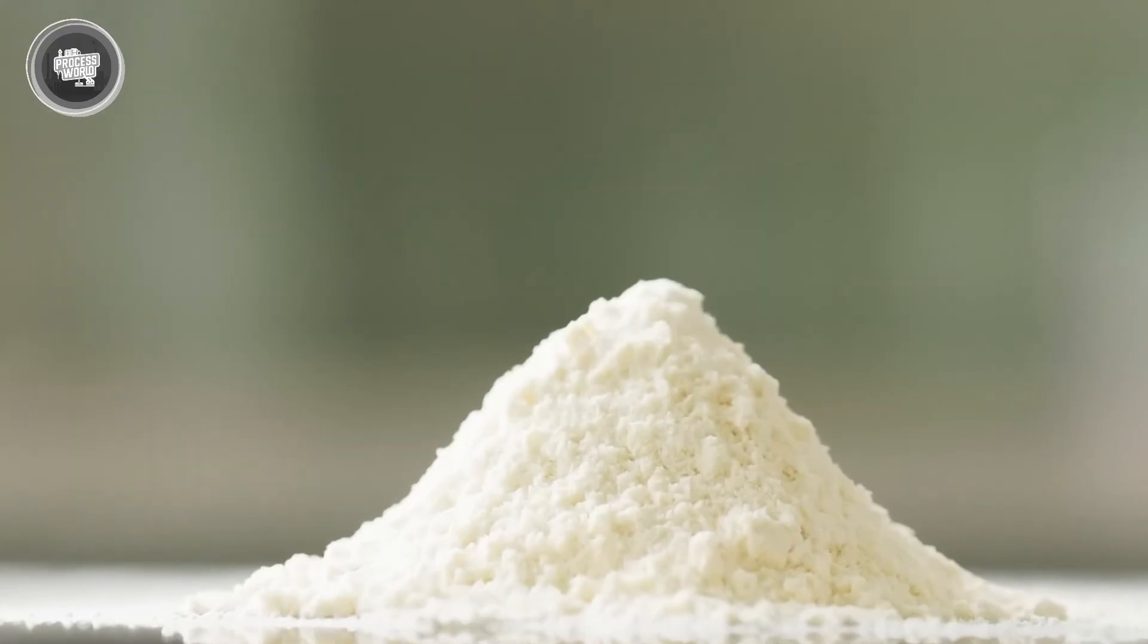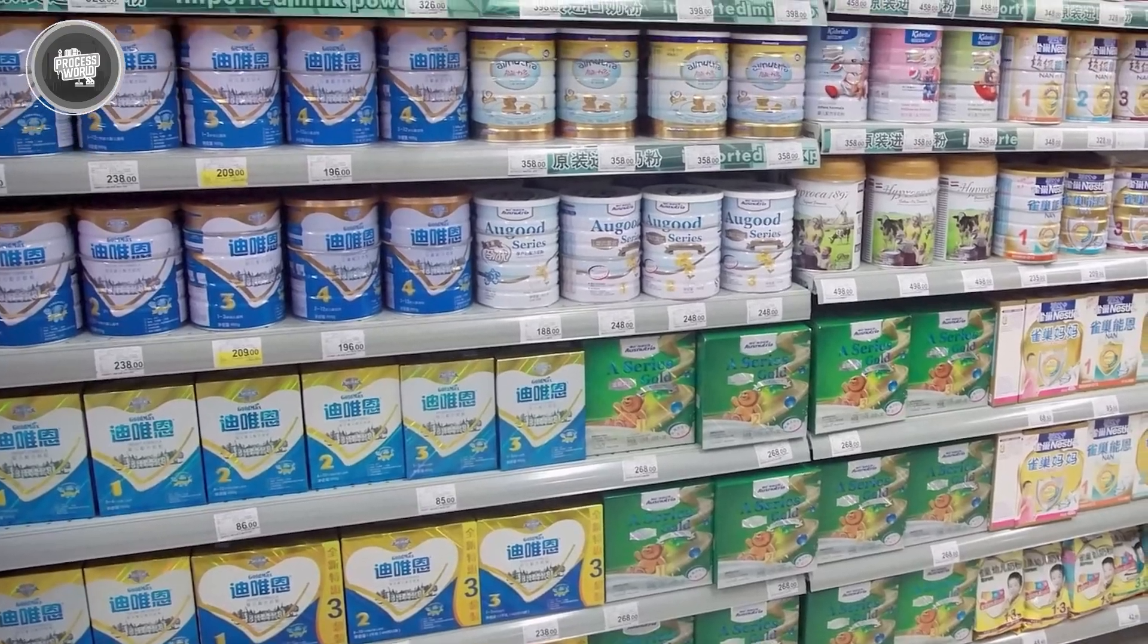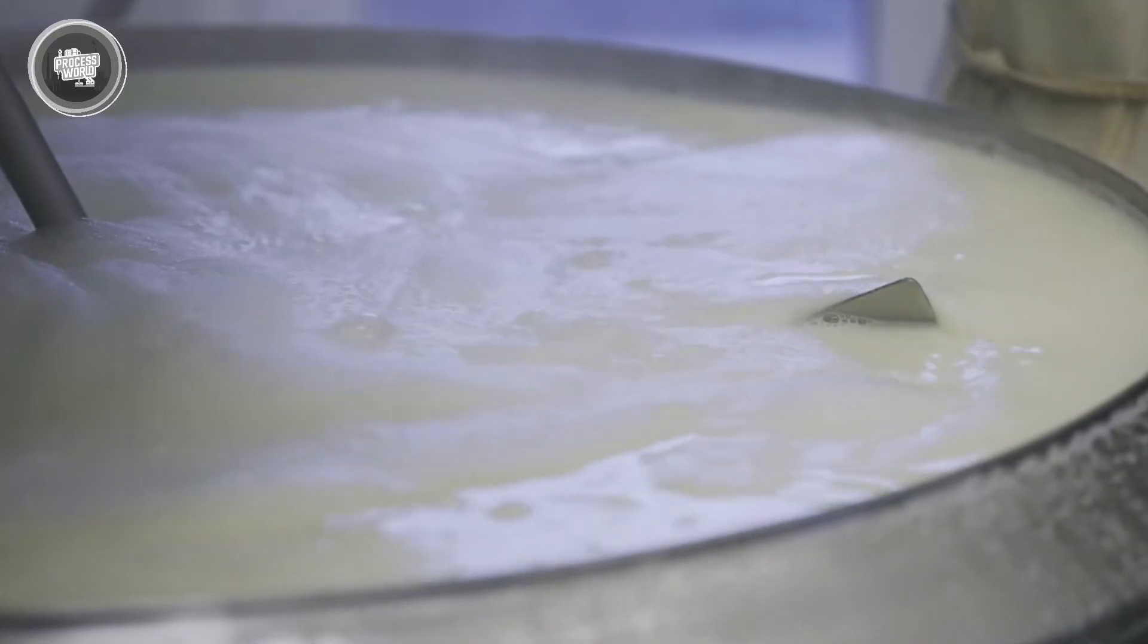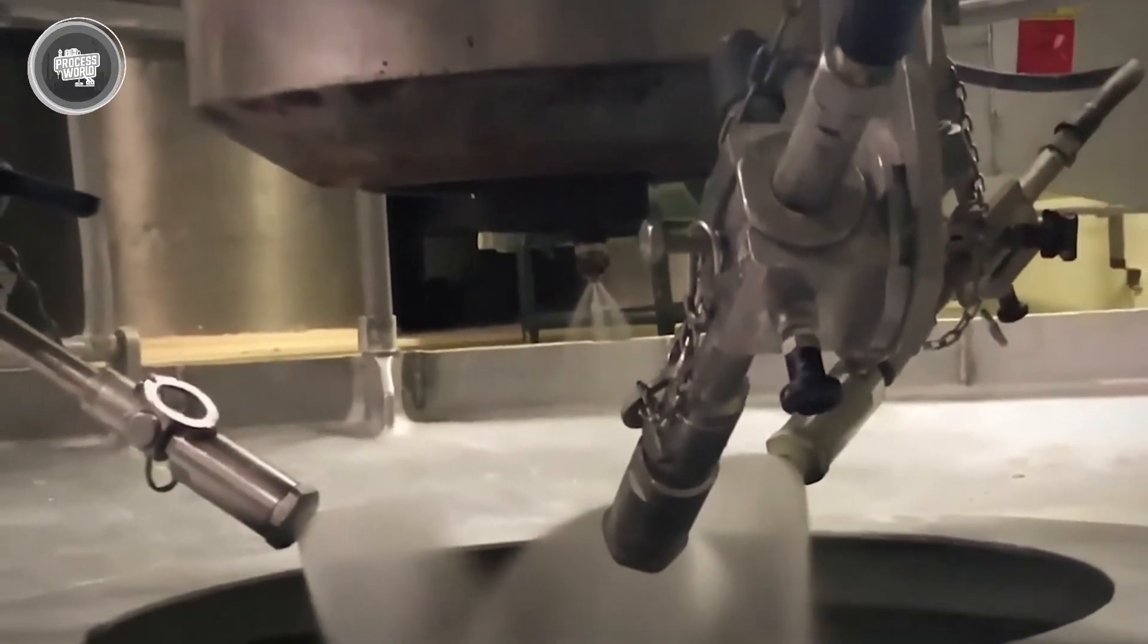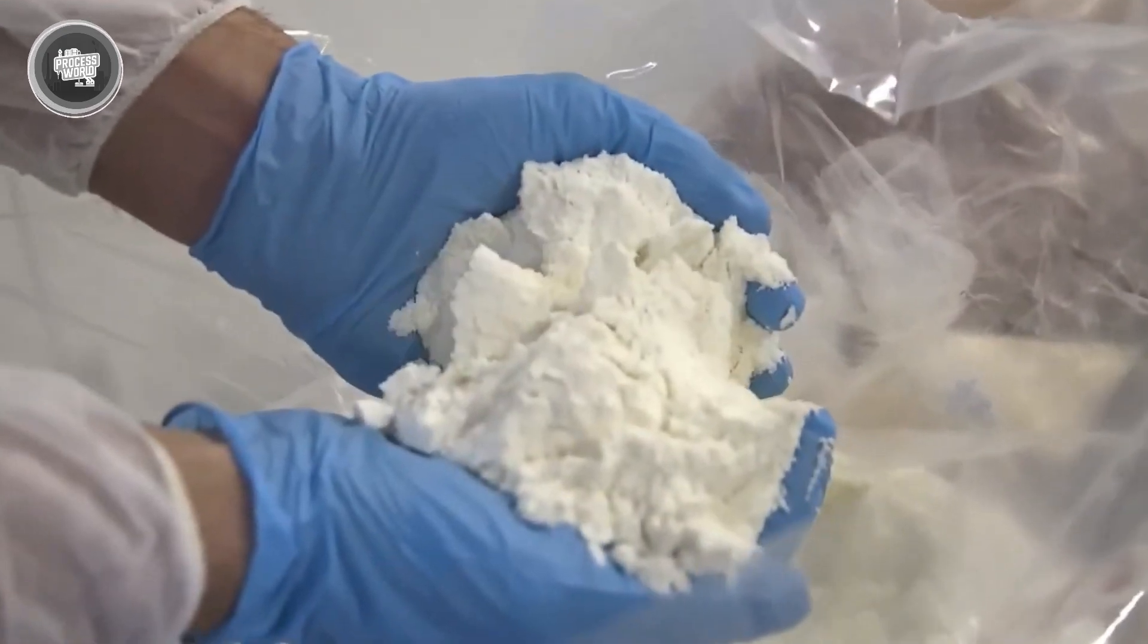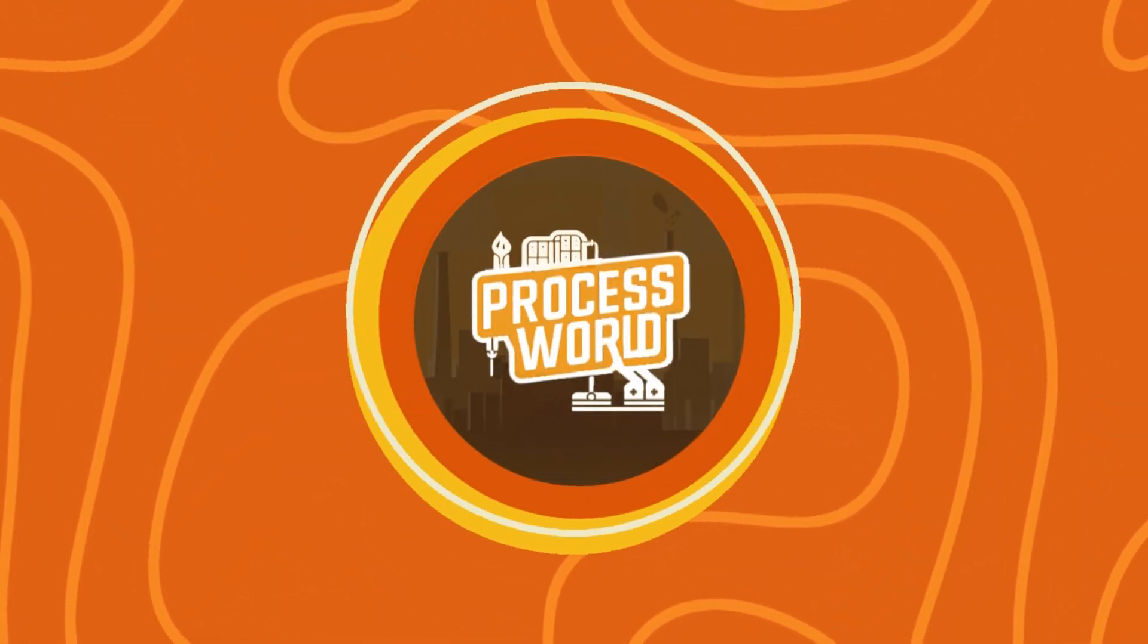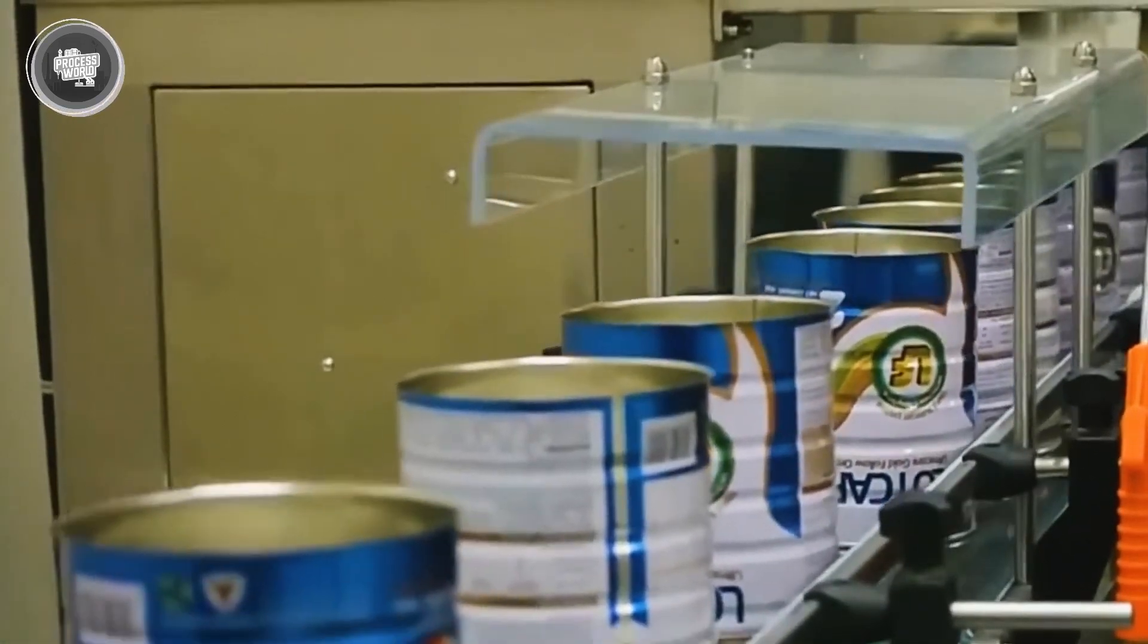Now that the milk has been transformed into a fine powder, the next step is packaging, which plays a huge role in keeping it fresh and safe. Since powdered milk can easily absorb moisture from the air, it needs to be sealed properly to prevent clumping and spoilage.